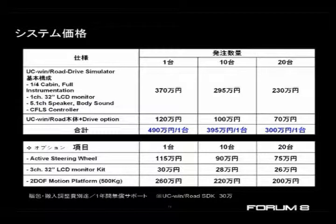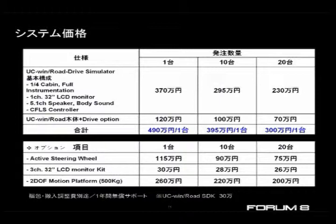There are other options that can be additionally purchased, including an active steering wheel, extra monitors, and a motion platform with two degrees of freedom. This chart shows the prices in yen, but you can contact Forum8 for more details and accurate prices in dollars or other currency.